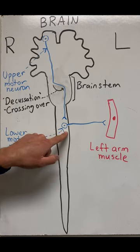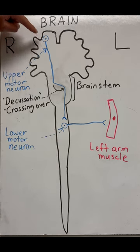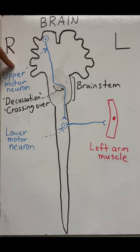This neuron is actually stimulated by an upper motor neuron, which is found in the brain's cortex. When this upper motor neuron fires, it takes an interesting path.